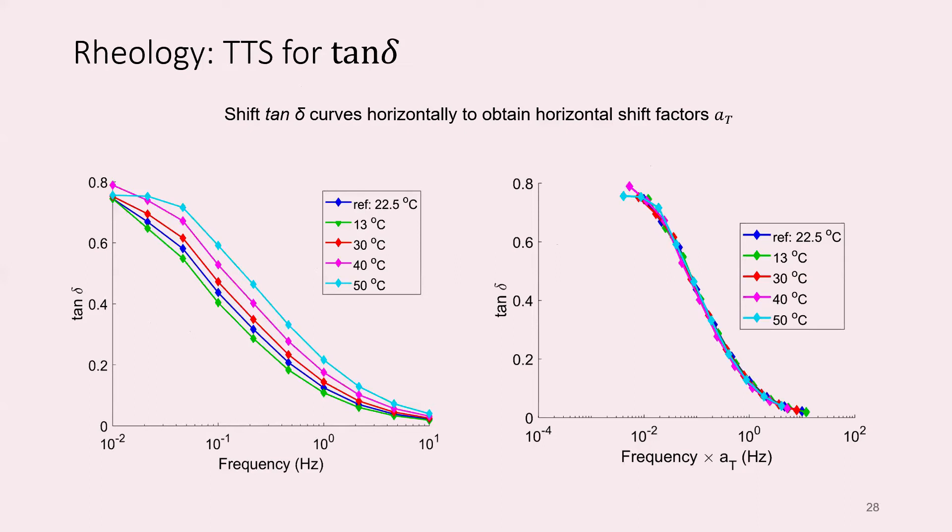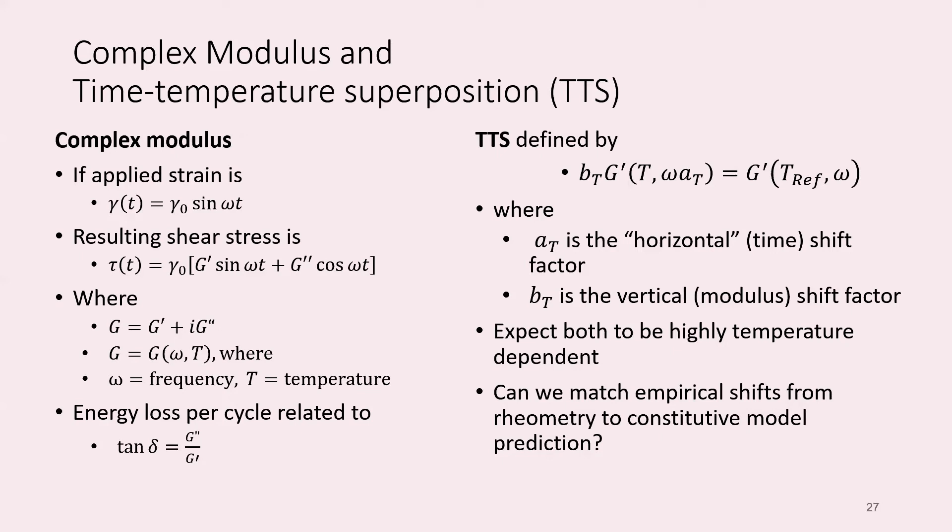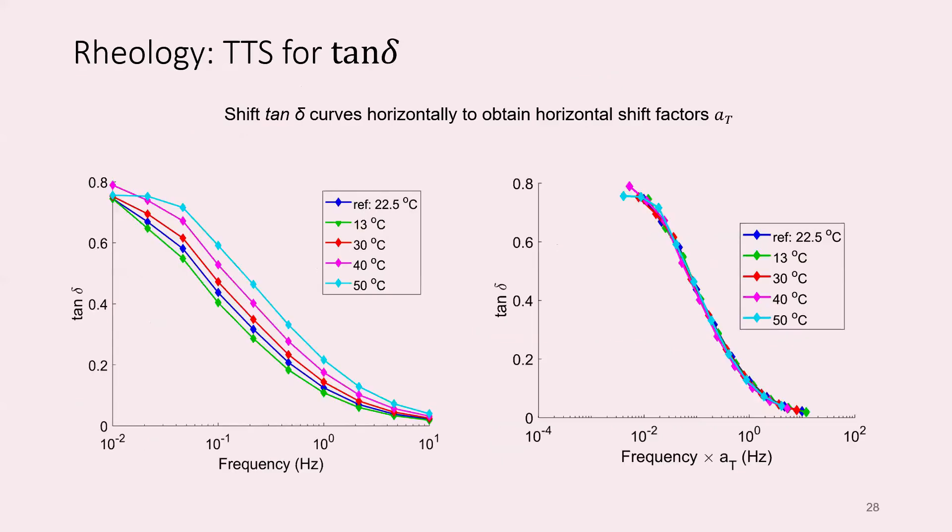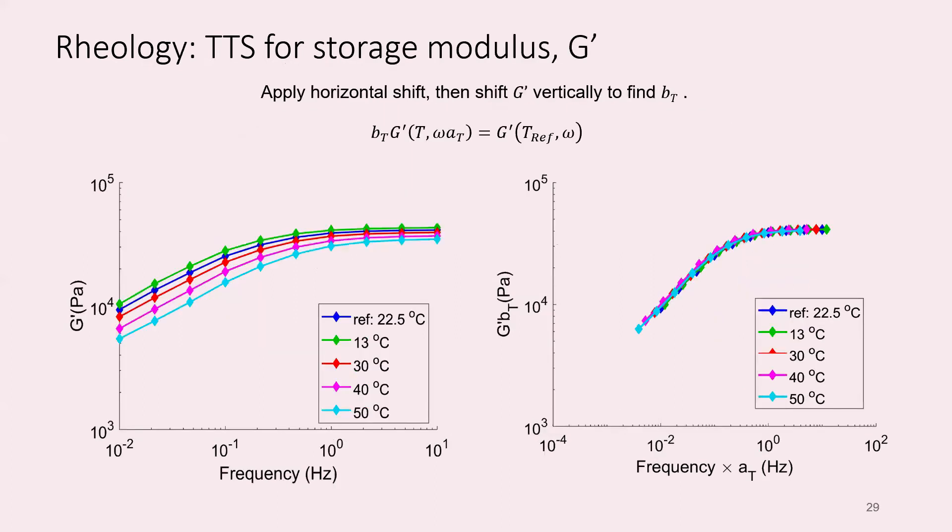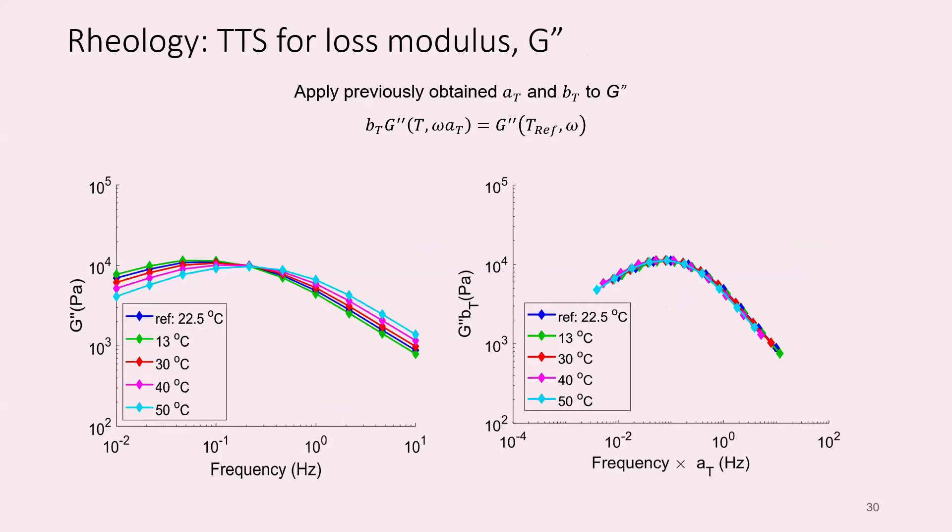The idea of time-temperature superposition is that you shift the time or frequency by a factor A sub T, and you can shift the storage modulus by a vertical shift B sub T. One is changing the rate at which everything occurs, the other is a scaling of the modulus. We expect both to be temperature dependent. The question we wanted to address is whether what we get from our tension test in terms of the shifts is consistent with the constitutive model. The raw data for the rheometry test is on the left. You can shift that to get a master curve, and that shift tells you the horizontal shift factor. Then you vertically shift the storage modulus to get the B sub T term.